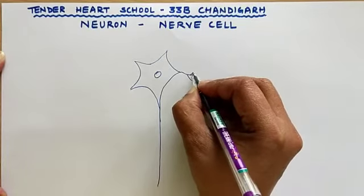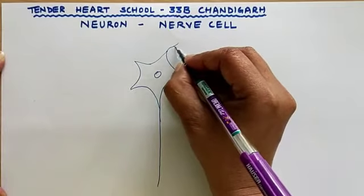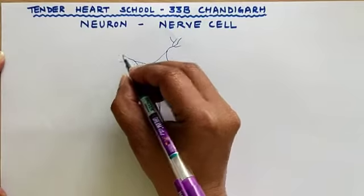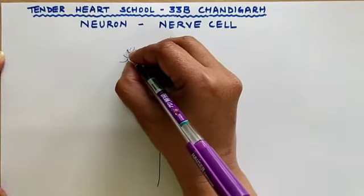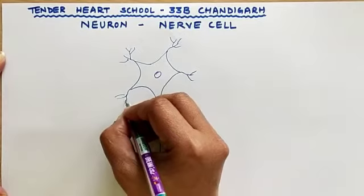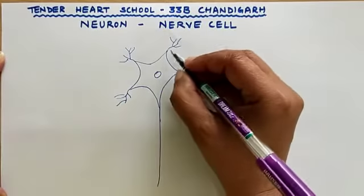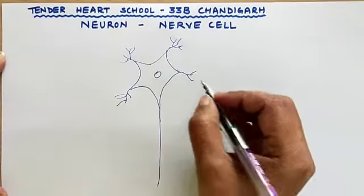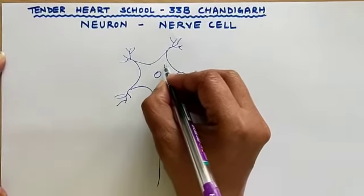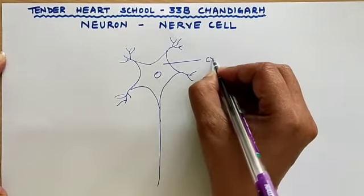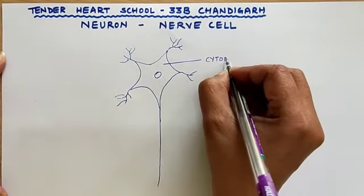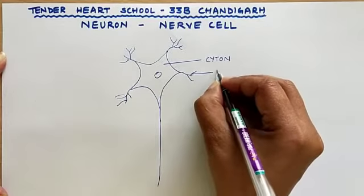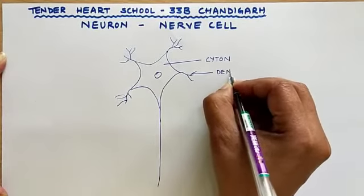This cytone is having fine branches coming out. These fine branches are called the dendrites. The main branches are the dendrons and further finer branches are the dendrites. So let us label it. This is the cytone, and these are the dendrites.